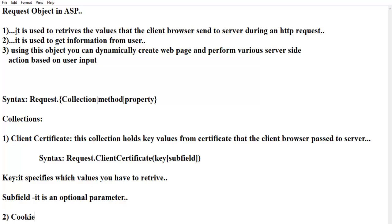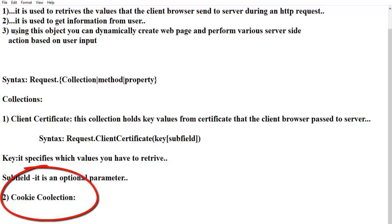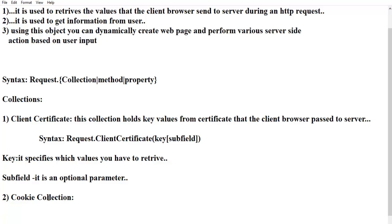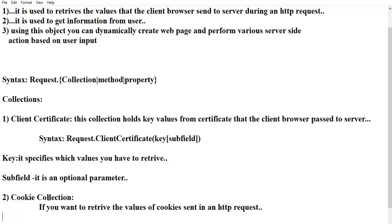The second collection is the cookie collection. The cookie collection enables you to retrieve the values of cookies sent in an HTTP request. Cookie should never be used to store secure data — it is not used to store any secure data. If you want to store something like a password, cookies are not used for that. Cookies are transmitted as clear text.